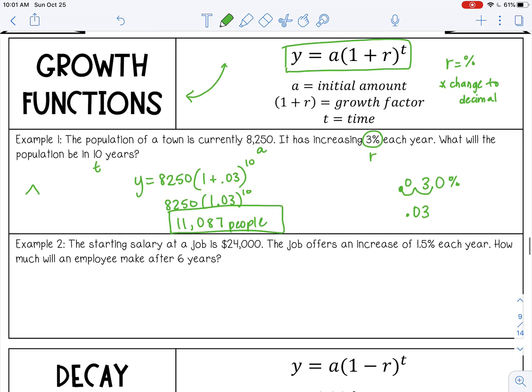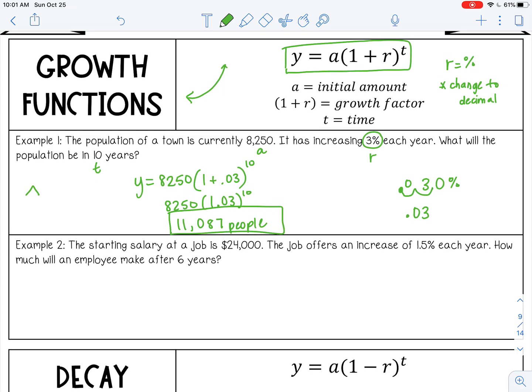Next one. The starting salary at a job is $24,000, that's my start, my initial amount A. The job offers an increase of 1.5% each year, that's my R. How much will an employee make after 6 years? That's my T.